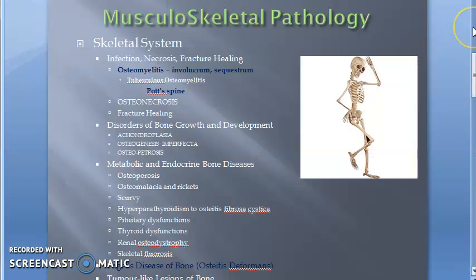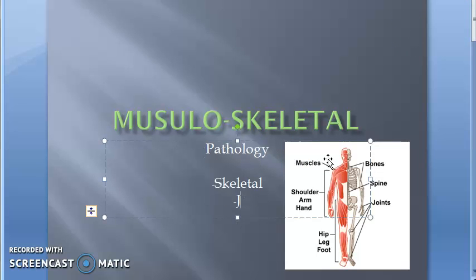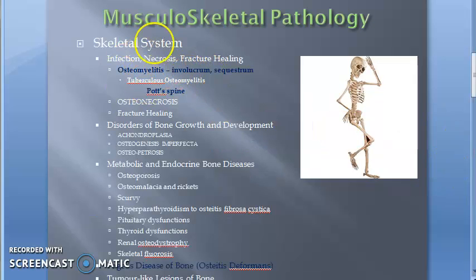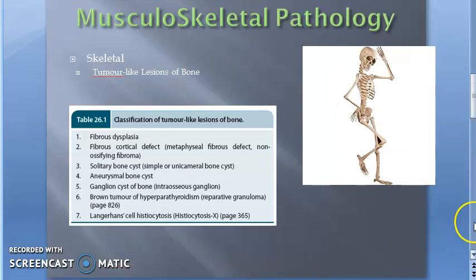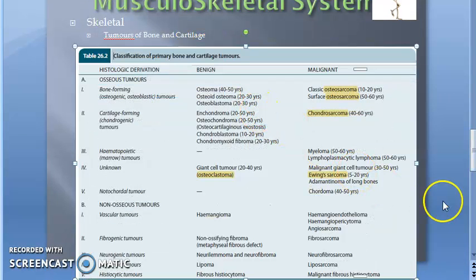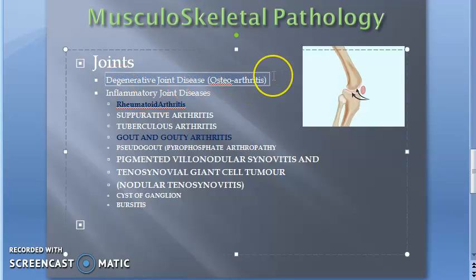We are studying musculoskeletal pathology in three parts: skeletal, joint, and skeletal muscle. In the skeletal system we have covered infections, necrosis, disorders of bone growth, metabolic diseases, Paget's disease, tumor-like lesions, and tumors of bone and cartilage. Now let's move on to joints.